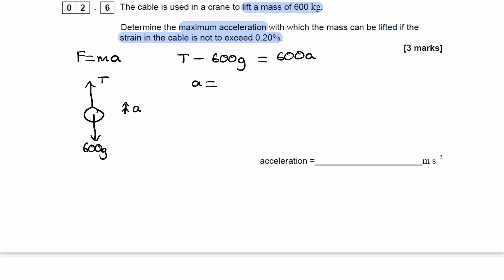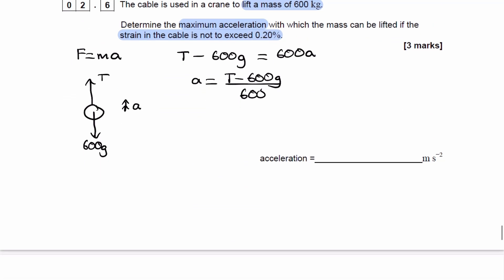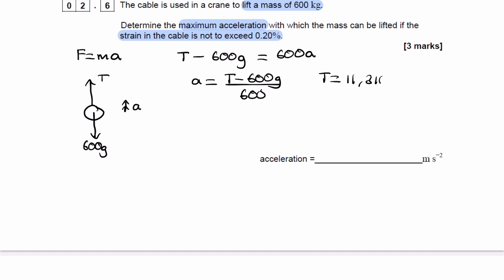So acceleration is then equal to T minus 600G all over 600, rearranging the equation that we have here. And the tension force, it says in the question that the strain should not exceed 0.2%. The tension will therefore be this force that we worked out here, 11,310. That was the force when the strain is 0.2%. It's the same cable. So T is 11,310. Put that into our equation, and we end up with A being equal to 9.04, so 9 meters per second squared.